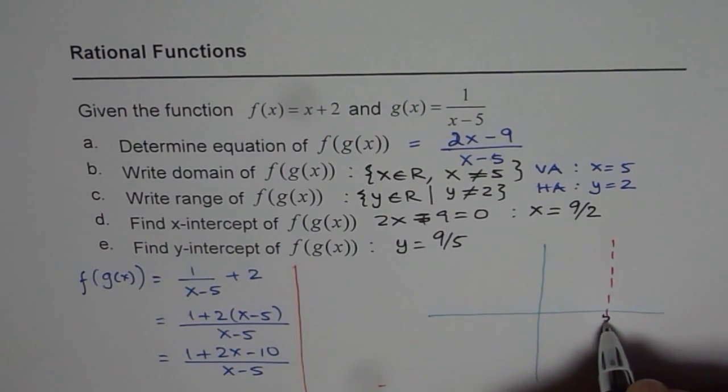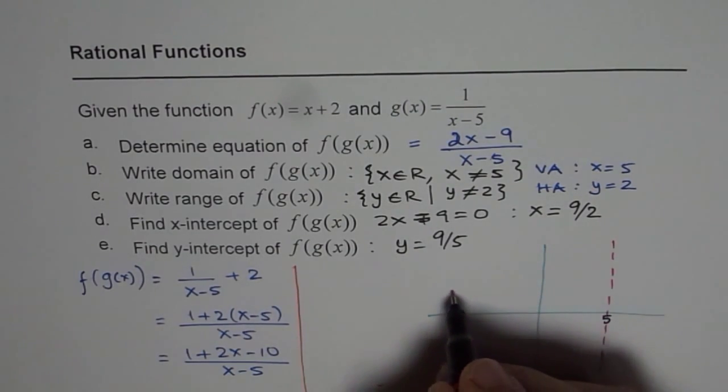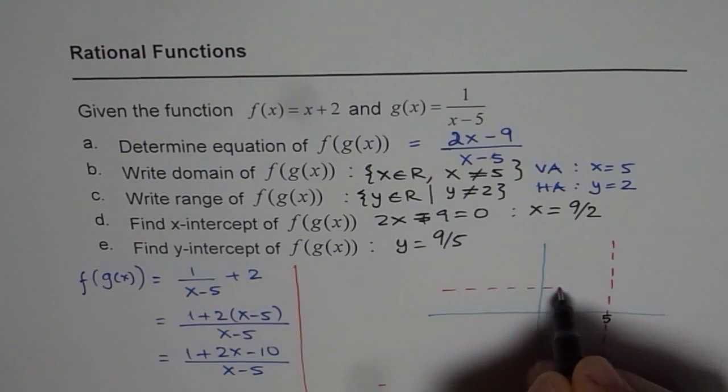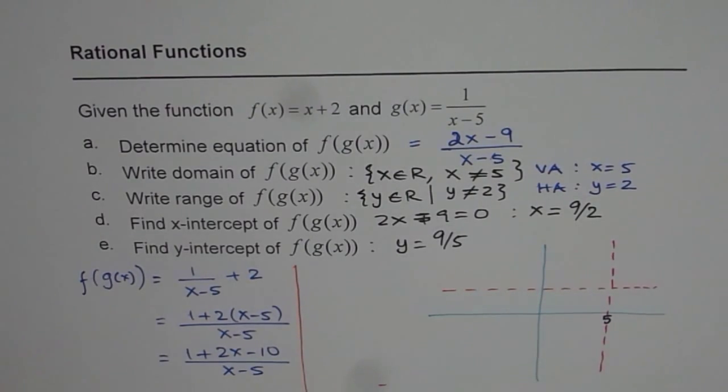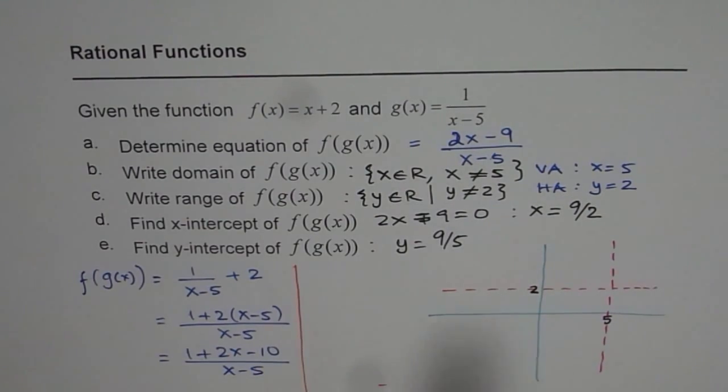Then, this is 5. We have a horizontal asymptote at y equals 2. So let us say this is y equals 2. That is the horizontal asymptote at y equals 2.